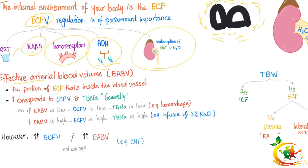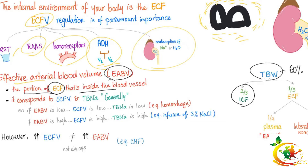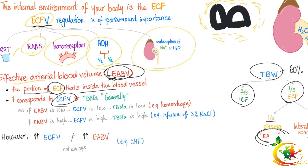There is a concept called effective arterial blood volume — the portion of the ECF that's inside a blood vessel. Your total body water is about 60% of total body weight; two-thirds is intracellular fluid and one-third is extracellular fluid. Of that one-third, one-fourth is in the plasma — this is the effective arterial blood volume — and three-fourths are in the interstitial space. The effective arterial blood volume corresponds to extracellular fluid volume and total body sodium generally speaking.